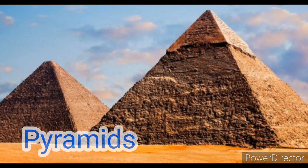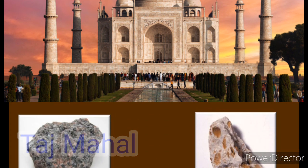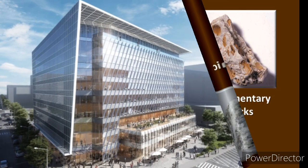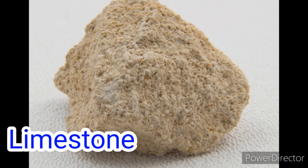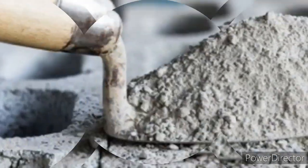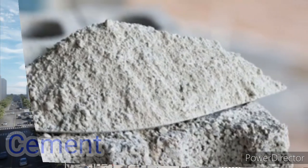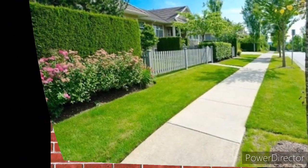Another example is the Taj Mahal, which was built from marble. Nowadays, rocks are still used to construct buildings, statues, and decorations. Limestone is still used in the construction of buildings, and cement — which is made from rock — is frequently used to construct buildings, highways, sidewalks, and walls.